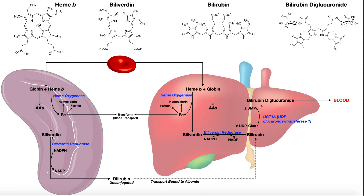Now we have biliverdin in either the spleen or the liver. The next enzyme is called biliverdin reductase, which utilizes NADPH to reduce biliverdin into something called bilirubin. You can see the structure of bilirubin right here. Now if you are the spleen, the last enzyme you have in this pathway is biliverdin reductase. So when biliverdin is converted to bilirubin, the bilirubin is going to leave the spleen and be transported to the liver. This is what we call unconjugated bilirubin — it doesn't have any additional functional groups attached to it. It is just bilirubin, bound to serum albumin, a protein that allows it to move to the liver.